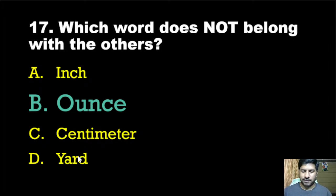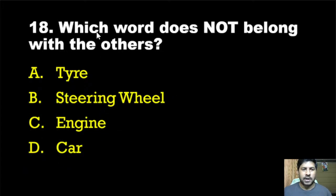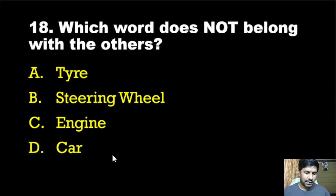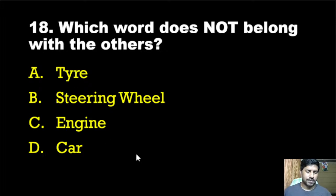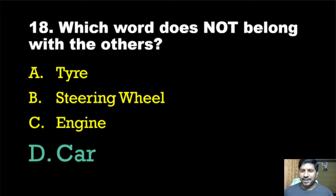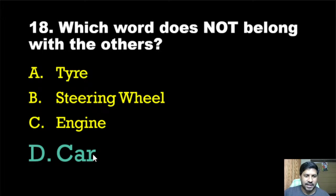Eighteenth question: Which word does not belong with others? Tire, steering wheel, engine, car. The correct answer is option D, car — because tire, steering wheel, and engine are all parts of a car, while car is the whole object itself.